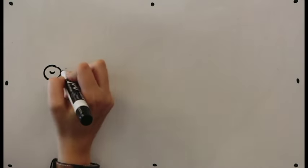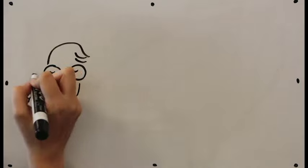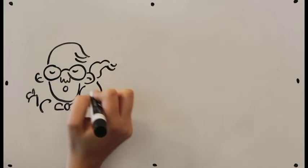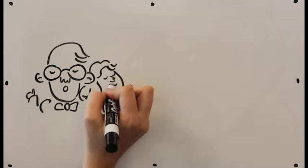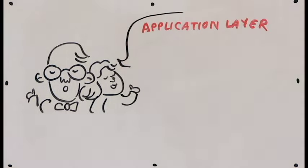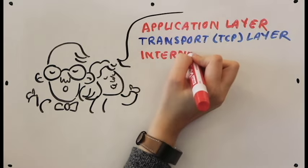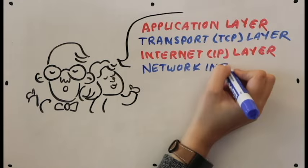But how can we hope to understand the TCP-IP rulebook? Well, smart people from around the world have separated the protocol into four distinct layers, and creatively called it the four-layer model. The layers are the application layer, the transport or TCP layer, the internet or IP layer, and finally the network interface.